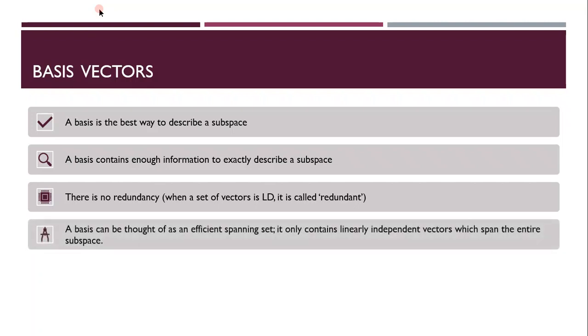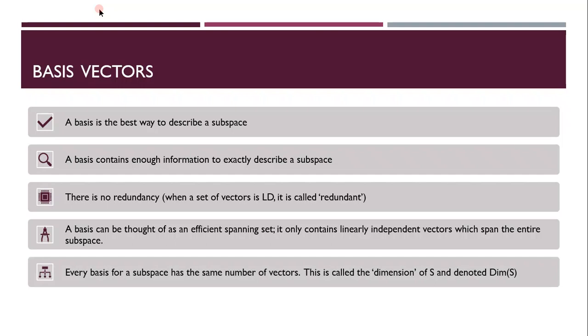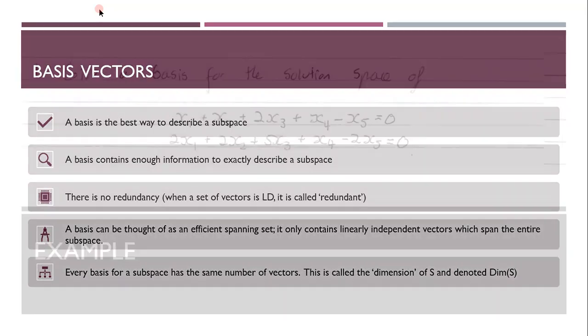A basis can be thought of as an efficient spanning set, because it only contains linearly independent vectors which span the entire subspace. Every basis for a subspace has the same number of vectors, and this is called the dimension of S, and denoted dim S.